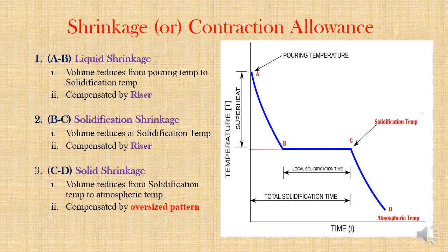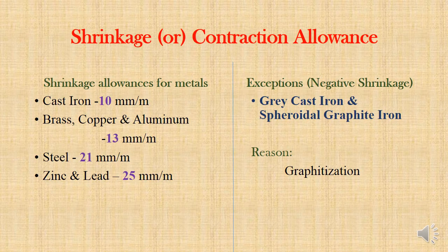Shrinkage allowance varies by metal. For cast iron: 10 mm per meter. For brass, copper, and aluminum: 13 mm per meter. For steel: 21 mm per meter. For zinc and lead: 25 mm per meter. Keep these values in mind as they are useful for exams.